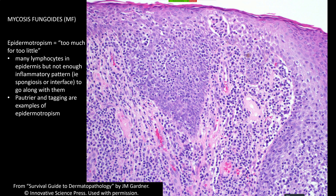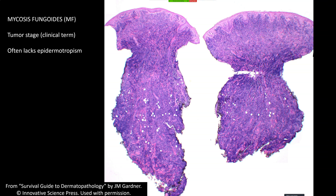Here's another case with really striking epidermotropism — Pautrier micro-abscesses plus lots of lymphocytes trickling all the way up into the epidermis, with a bit more cytoplasm than you'd normally expect. That can be confusing — you might wonder if those are melanocytes or Langerhans cells — but immunostains will sort that out. Now this is a case of tumor stage mycosis fungoides, and in my experience tumor-stage MF often lacks epidermotropism, at least in the biopsy portion I have. Don't be surprised to see a sheet of lymphocytes filling the dermis with no epidermotropism at all.